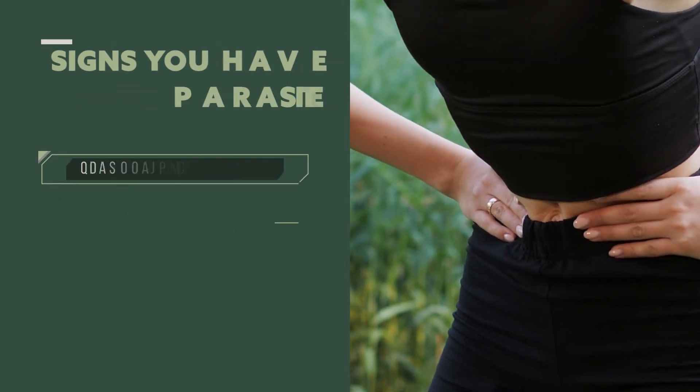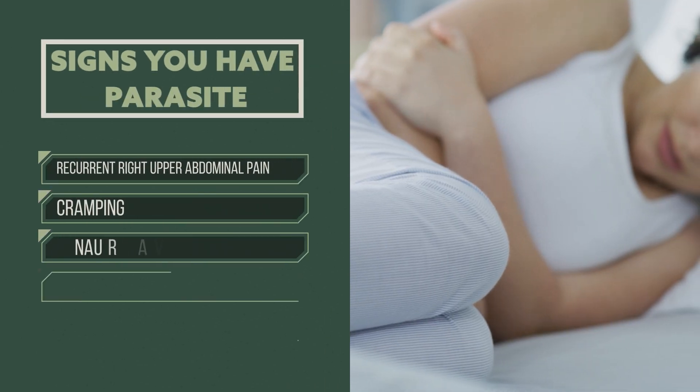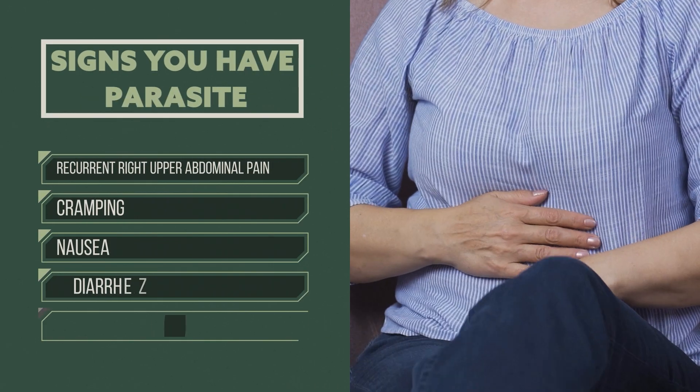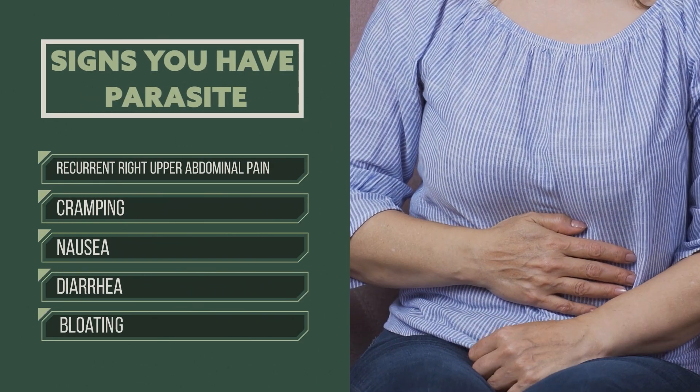If you have recurrent right upper quadrant abdominal pain, cramping, bloating, nausea, or diarrhea, these could all be signs you have a parasite.